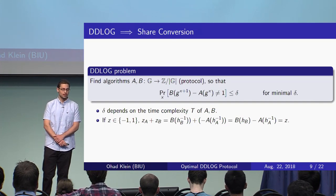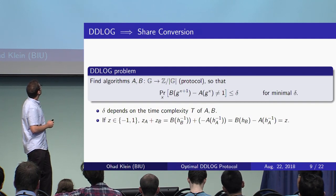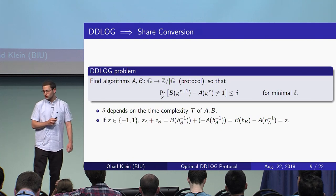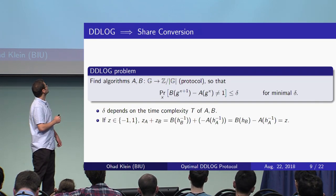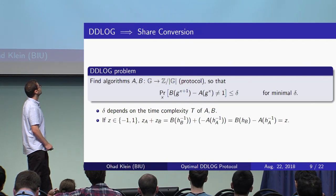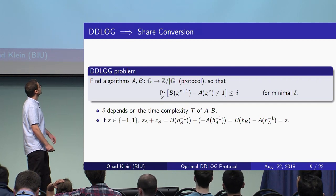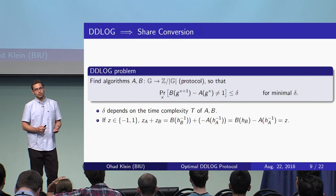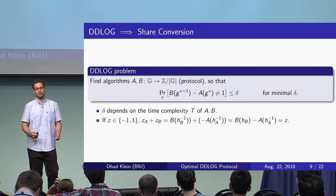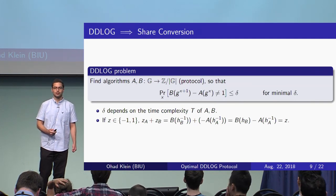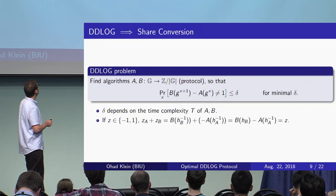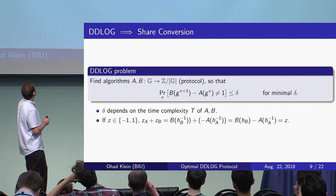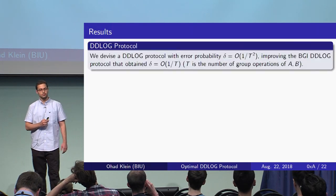In the DD log problem, we search for two algorithms A and B so that they transform the input difference in the exponent to an integer additive difference in the output. So there is a difference in the exponent, and we transform it to some difference in the output. We can do this just by taking logs. However, we search for a trade-off between the running times of algorithms A and B, and we allow them to error with some probability. We search for a trade-off between the error probability and the running times. If you see the details, you can see that you can solve the share conversion problem if you have a solution for the distributed discrete log problem.